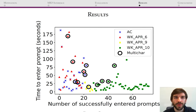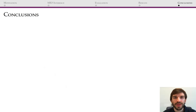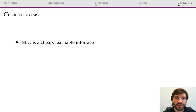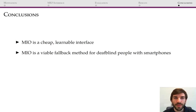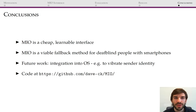This scatterplot shows the improvement with experience of both participants. Note the sharp decrease in time taken to enter target words for WK during the second experiment. In conclusion, MIO is a cheap and learnable interface for deafblind people. MIO is a viable fallback method for deafblind people with smartphones, and future work should include integration into the operating system. WK suggested vibrating the sender identity when a message is received. You can find the code for this project on GitHub. Thank you.